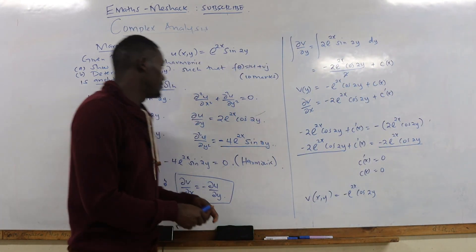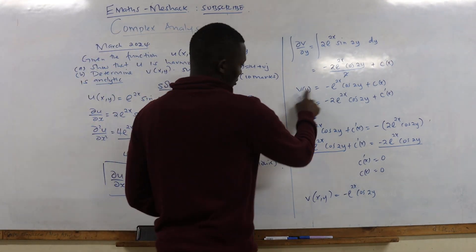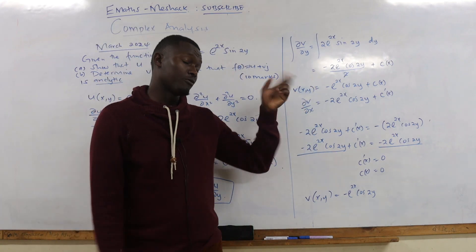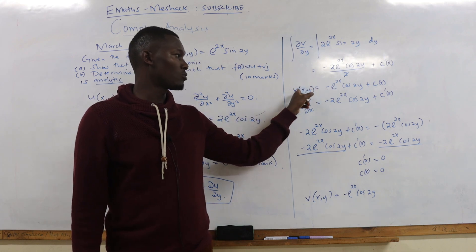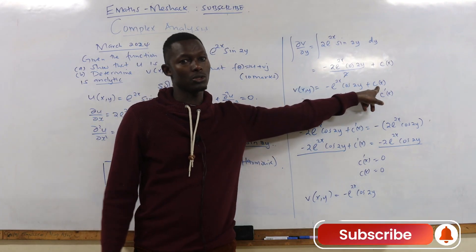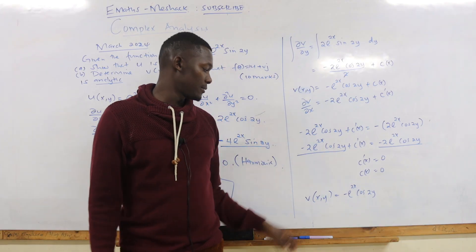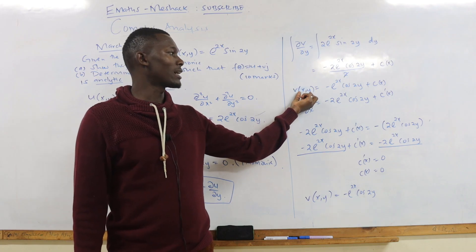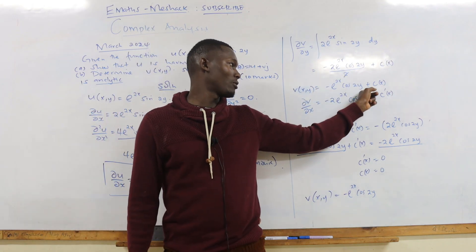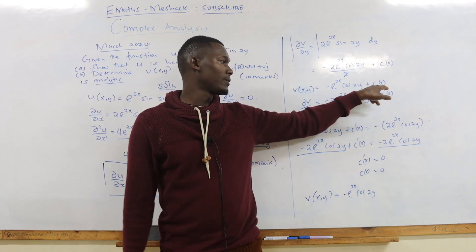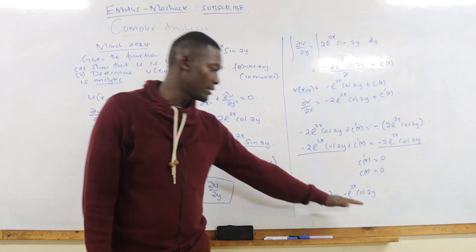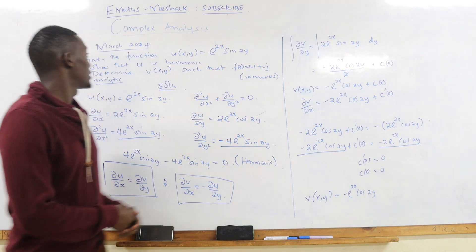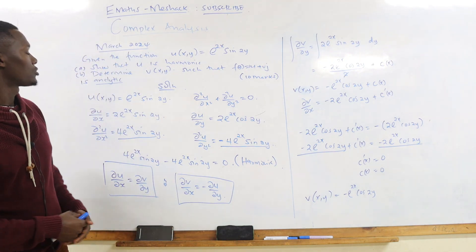Therefore v(x,y) = -e^(2x) cos(2y) + 0, which gives us v(x,y) = -e^(2x) cos(2y). The variables x and y appear explicitly in this function. The key step was always finding c(x), and that is your complete function v in terms of x and y — worth 10 marks. Now let's check the last question from November 2023.